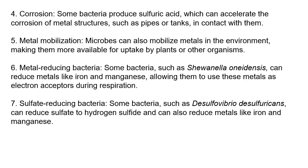Then there is corrosion. Some bacteria produce sulfuric acid, which accelerates the corrosion process of metals. For example, where water pipes or tanks are present, microorganisms grow naturally, and if a particular bacterium is growing in large numbers and producing sulfuric acid, the pipe will get corroded naturally. Thus, they can alter the chemical properties of metal and potentially cause corrosion.